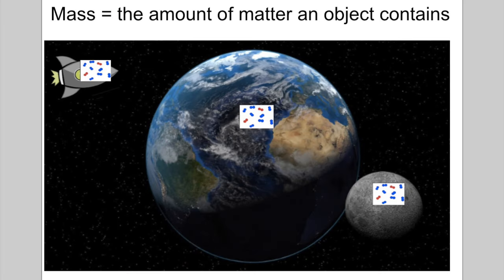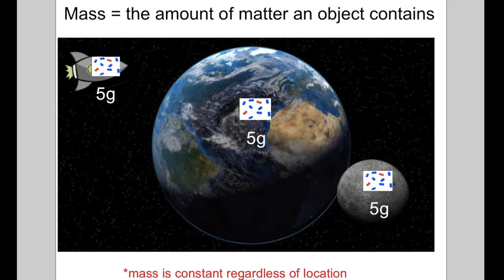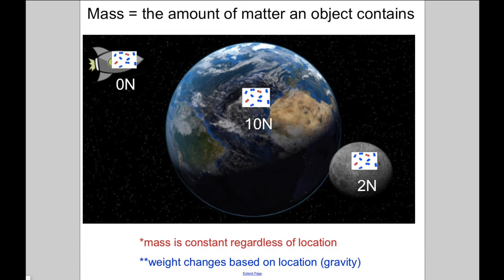Mass is the measure of the amount of matter in an object. Mass does not vary with an object's location in the universe, but weight does because it depends on gravity.